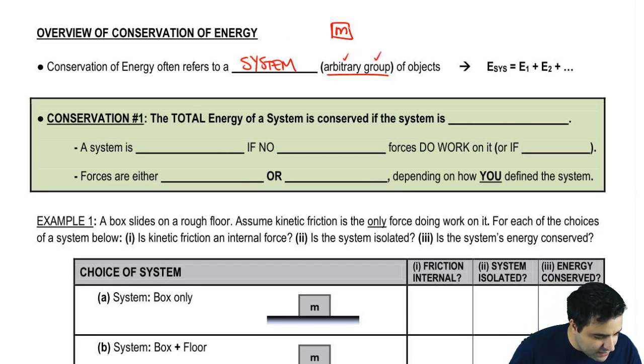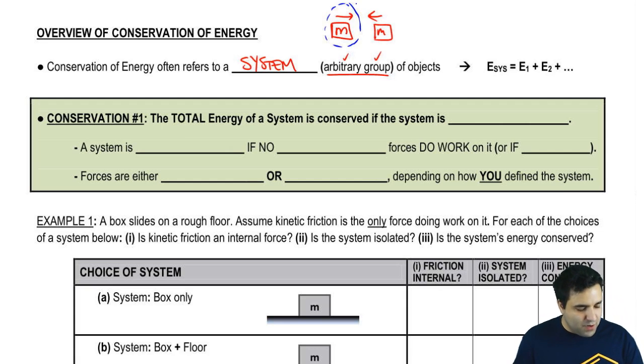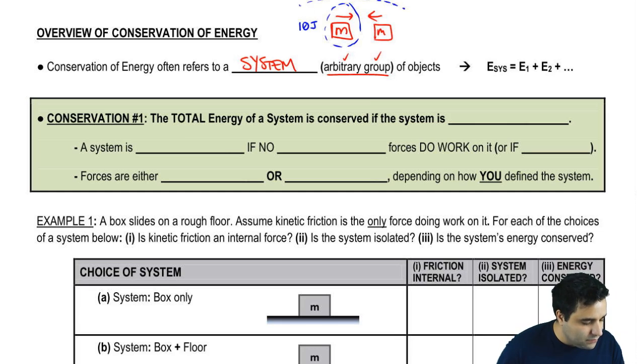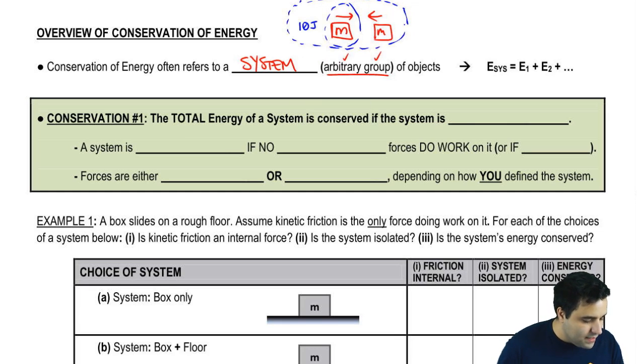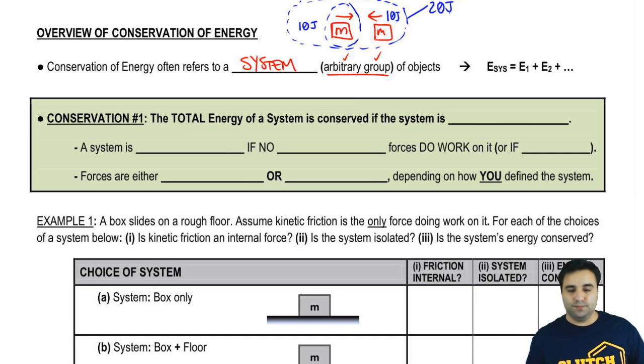So for example, if I have two boxes going against each other, I could say, let's consider the system to be just this box. And if this box has an energy of 10 joules, the system has an energy of 10 joules. But I could also say, I want the system to be these two boxes here. And if they each have energy of 10 joules, then the system has an energy of 20 joules.